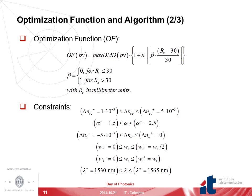The optimization function is proportional to the max DMD value times a penalty factor for solutions with RC higher than 30 millimeters. We have added an epsilon parameter such that we can consider or ignore the RC requirements. This optimization function is subject to several constraints: the ΔNCO value cannot be lower than 1×10⁻³ due to manufacturing limitations and cannot be higher than 5×10⁻³ since DMD increases with ΔNCO. Additionally, α should be between 1.5 and 2.5, and the ΔN range should not be deeper than 5×10⁻³.